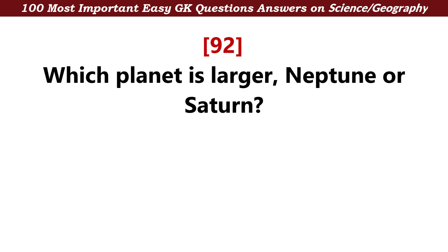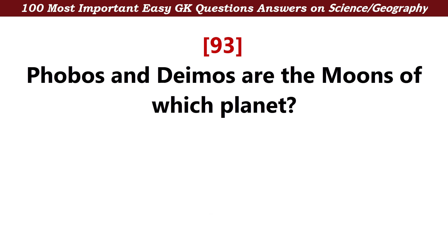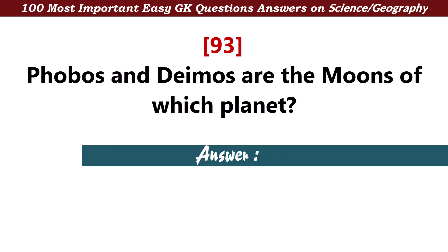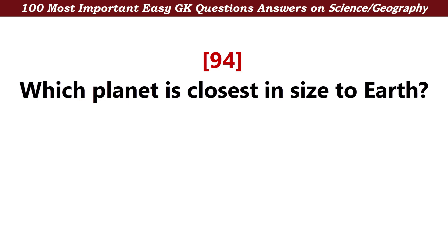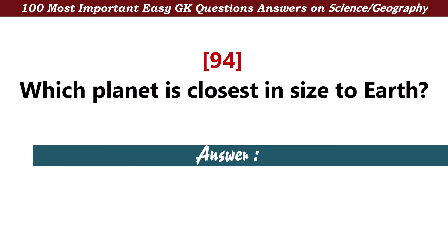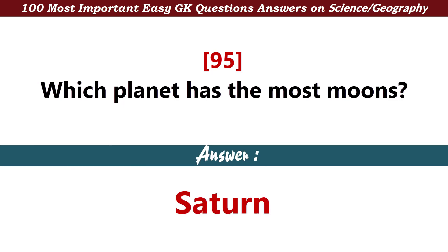Which is the largest planet — Neptune or Saturn? Answer: Saturn. Phobos and Deimos are the moons of which planet? Answer: Mars. Which planet is closest in size to Earth? Answer: Venus. Which planet has the most moons? Answer: Saturn.